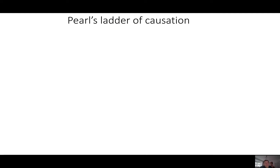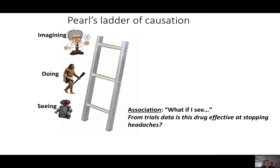Turing Award winner and world-leading computer scientist Judea Pearl has argued convincingly of the need to incorporate causal knowledge in order to improve the state of the art of AI learning. He uses a simple three-step ladder to represent the three levels of learning. At level one, we learn by seeing, but we can only learn associations this way — such as from trials data: is this particular drug effective at stopping headaches? Or in our bank loan example, we can learn whether unemployed people given loans are more likely to default.